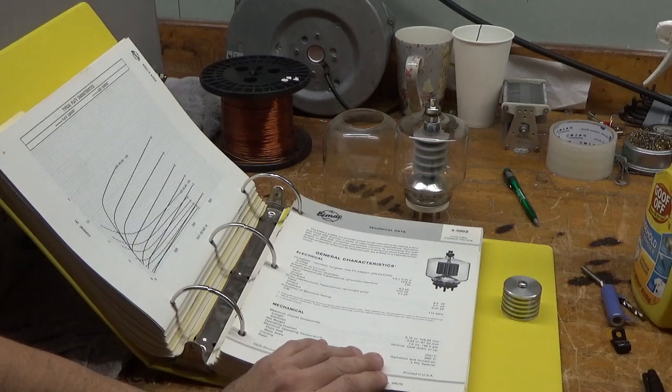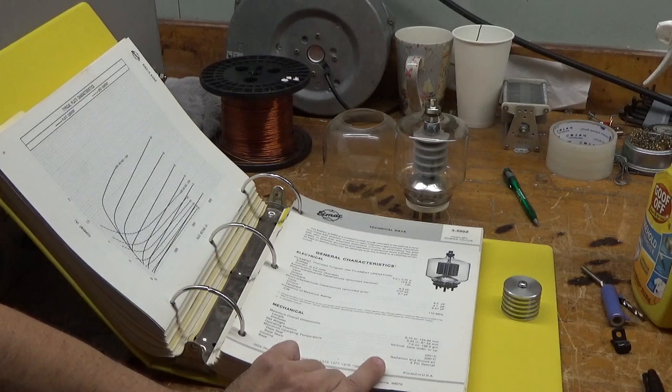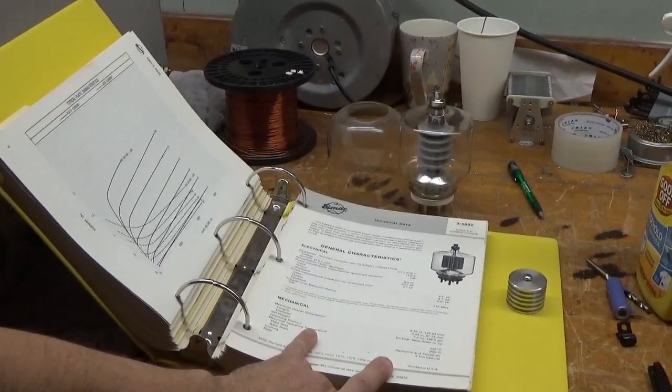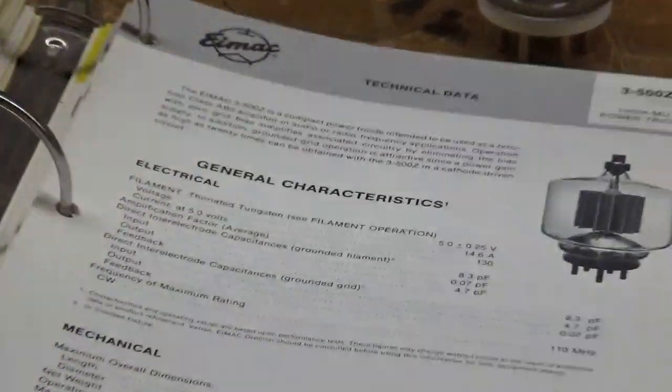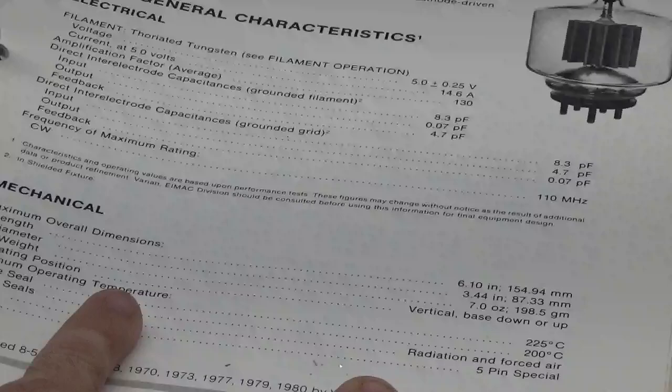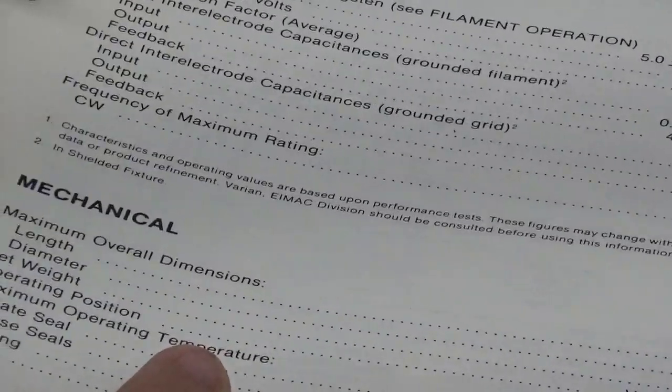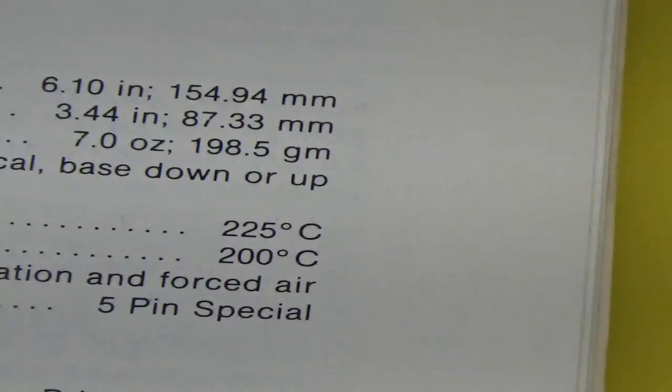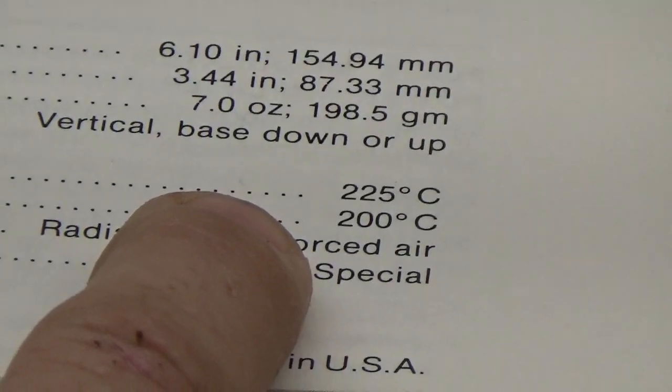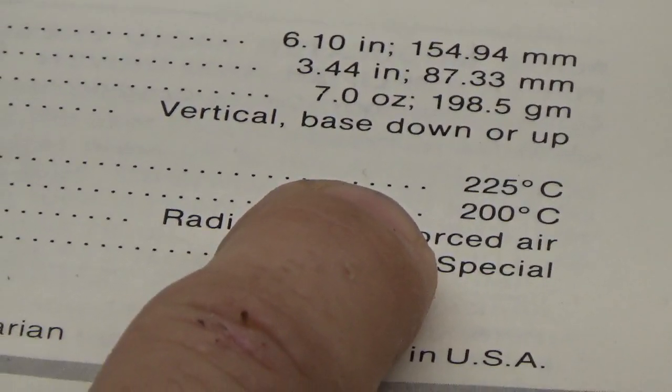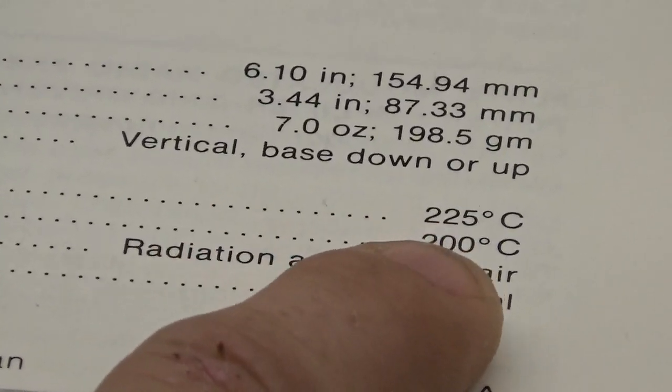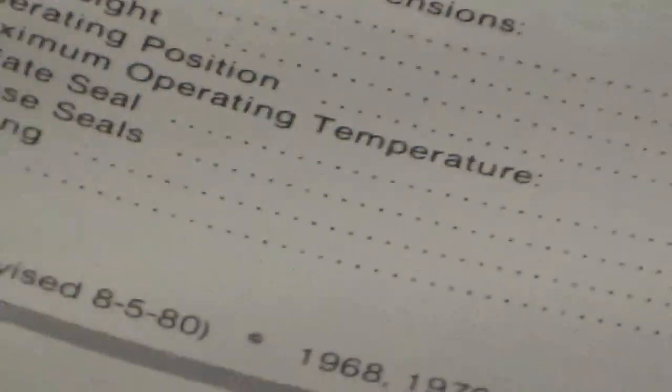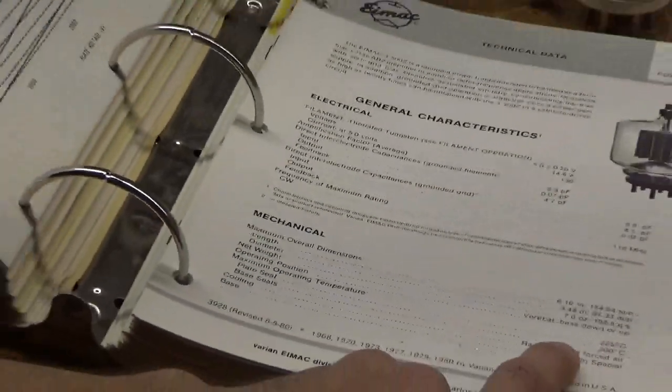So first off it tells you the maximum operating temperature. Let me try to zoom in here. Try to keep the camera nice and steady for you guys. So hopefully you can read that. Right there. So the maximum operating temperature for the plate seal is 225 degrees Celsius. And then the base seal is 200 degrees Celsius. So I'll see that right there. I'll zoom out.